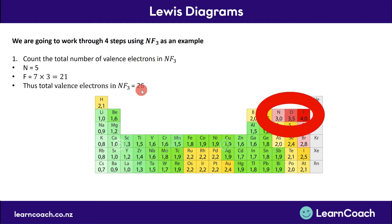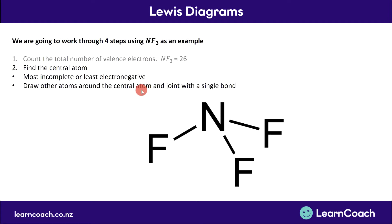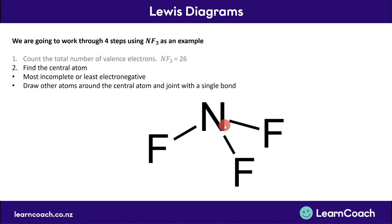So there must be 26 dots in our Lewis diagram. The next step is to find the central atom, which is always the most incomplete or least electronegative atom — the one furthest from having a full valence shell of eight electrons. Fluorine has seven, so it's one away. Nitrogen has five, so it's three away. Therefore nitrogen must be the central atom.